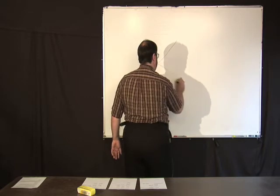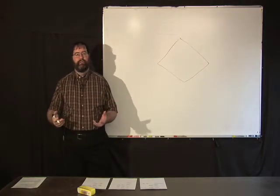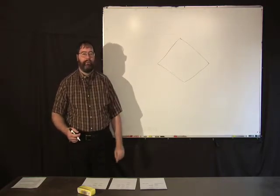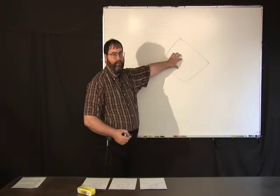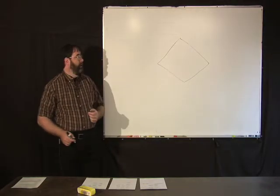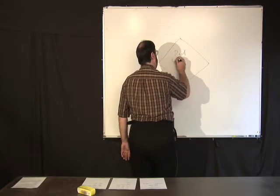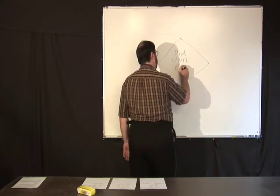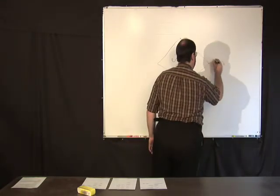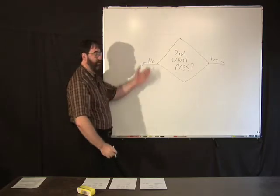A diamond is used for a symbol for a decision. One of the properties of a decision is one input, at least two outputs. So, inside the diamond, you have a question. And then, the answer to the question is a label on the lines coming out of it. For instance, did unit pass? You write some question in the diamond. And then, you have maybe two branches coming out, yes and no. And those might go to other processes.